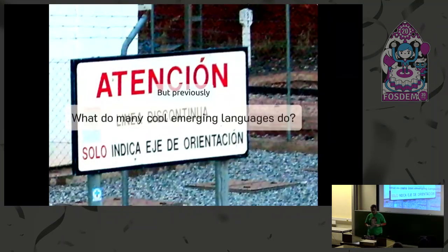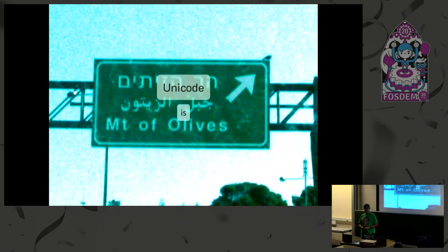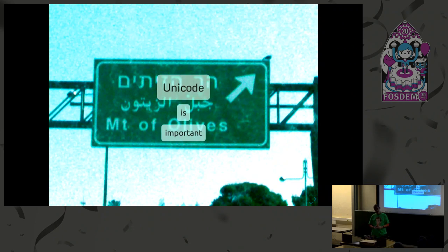What are the kinds of things that many cool emerging languages do nowadays? What kinds of things are you going to find in new languages, and also in all languages targeting new features? One of them is Unicode, because Unicode is important — it's extremely important. It's the basis of every single language, the foundation of every single text computing operation nowadays.